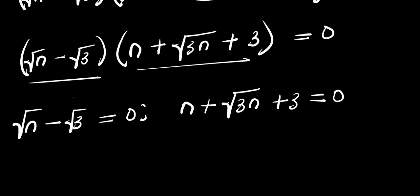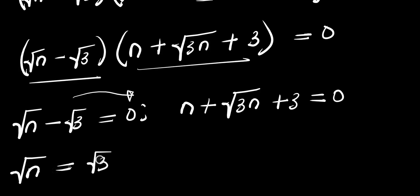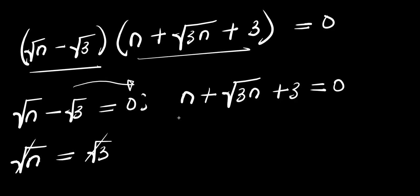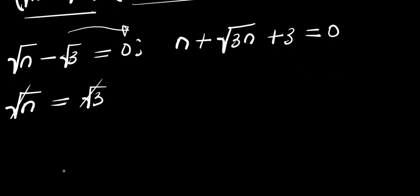So I can equate each of these factors to zero. From root n equals root 3, the square roots cancel, and this simply means n equals 3. That is my n₁.